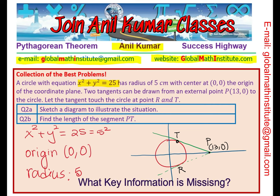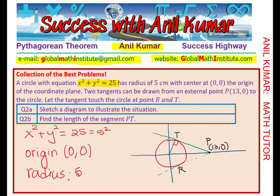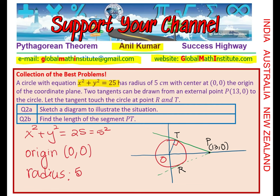To solve this, another key piece of information is required: the radius and the tangent always form a right angle of 90 degrees. That gives us a right triangle OPT. In this right triangle, we need to find the length PT. The other two lengths — OP and OT — are known to us, so you can now solve the question.